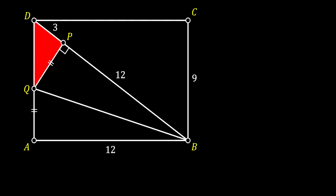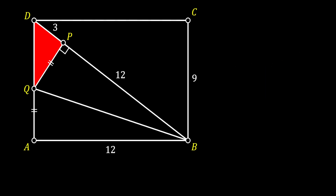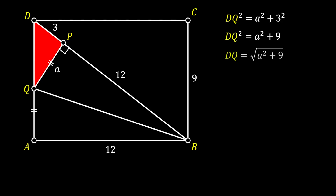I'm going to start each method with this sketch and these values we just calculated. Let's do method number 1, which will use the Pythagorean theorem. We start by labeling leg QP as A. Then we use the Pythagorean theorem to find hypotenuse DQ: DQ squared equals A squared plus 3 squared, so DQ equals the square root of (A squared plus 9).